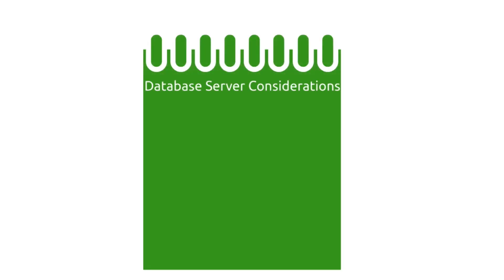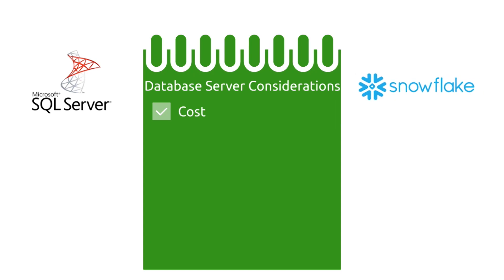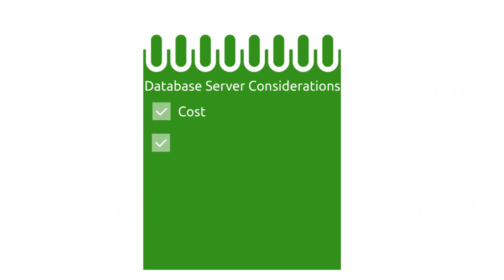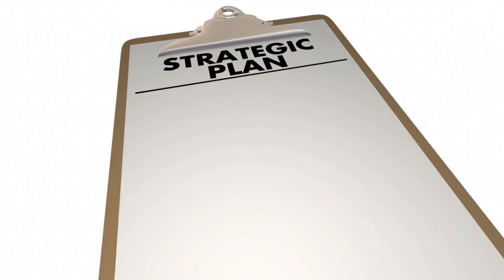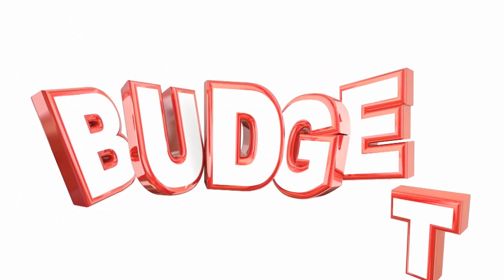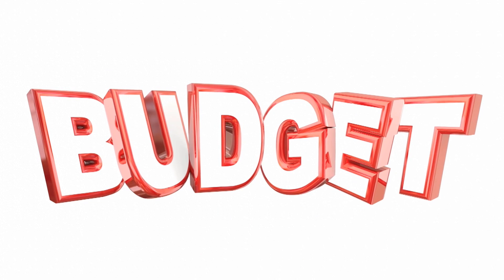What are some of the things you should consider when choosing a database server? First is costs — costs of database servers can vary wildly. Maybe you want to save a few bucks and go with SQL Server, or maybe cost is no issue and you want to migrate to a cloud database like Snowflake. Or maybe you prefer to keep things on-prem with a solution like Netezza or Teradata. Next, you need to decide whether or not you're going to move to the cloud or stay on-prem. Important factors include the company's overall cloud strategy and whether the company prefers the OPEX or CAPEX model — if OPEX, lean towards cloud; otherwise, lean more towards on-prem.